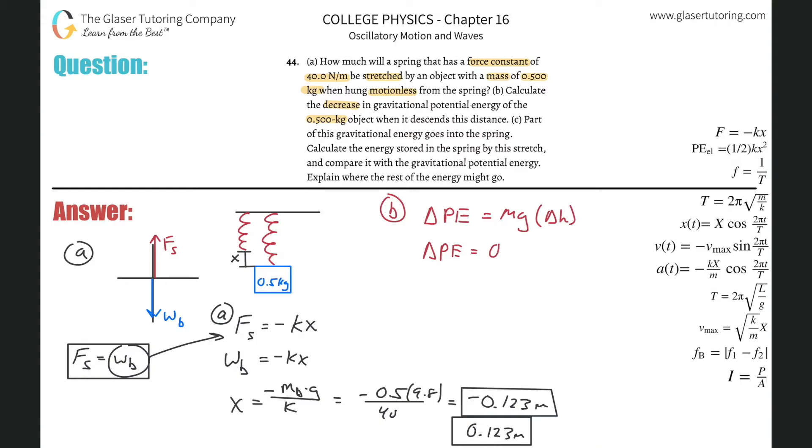So the mass here is going to be 0.5 kilograms, gravity is 9.8, and the height change was, you can write this as a negative sign if you like, given the picture. 0.123. And then all we would need to do is now calculate, because the potential energy should have decreased. It got lower. So that's why the negative sign should hopefully make sense there.